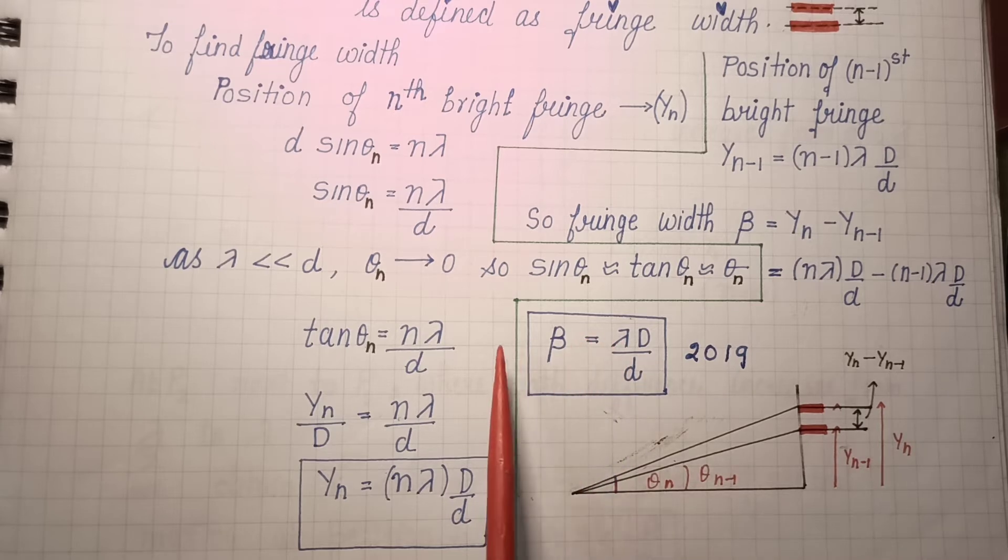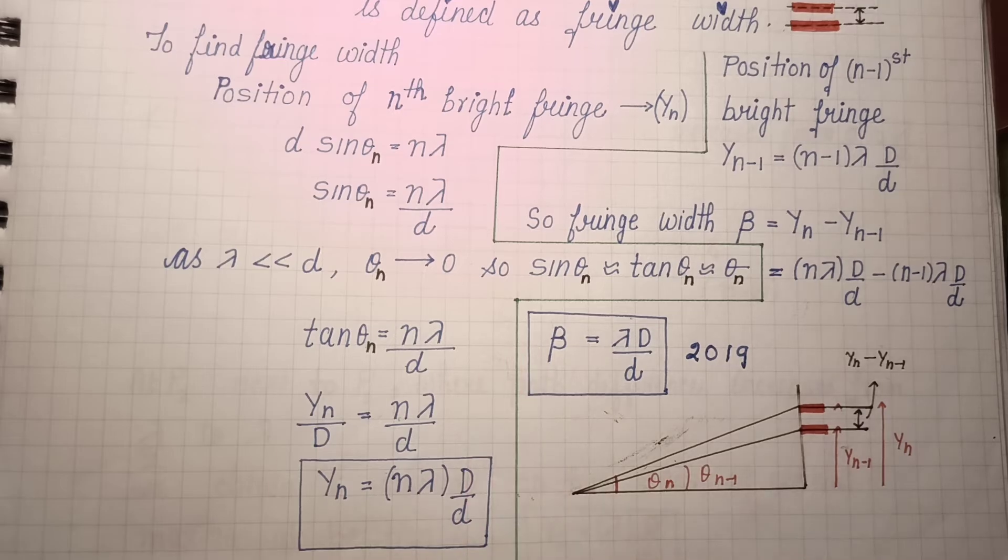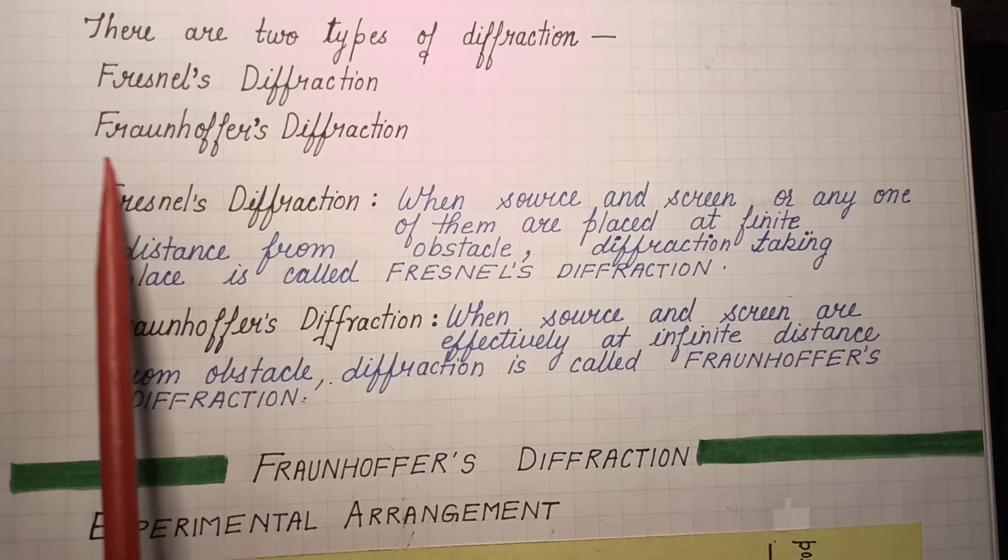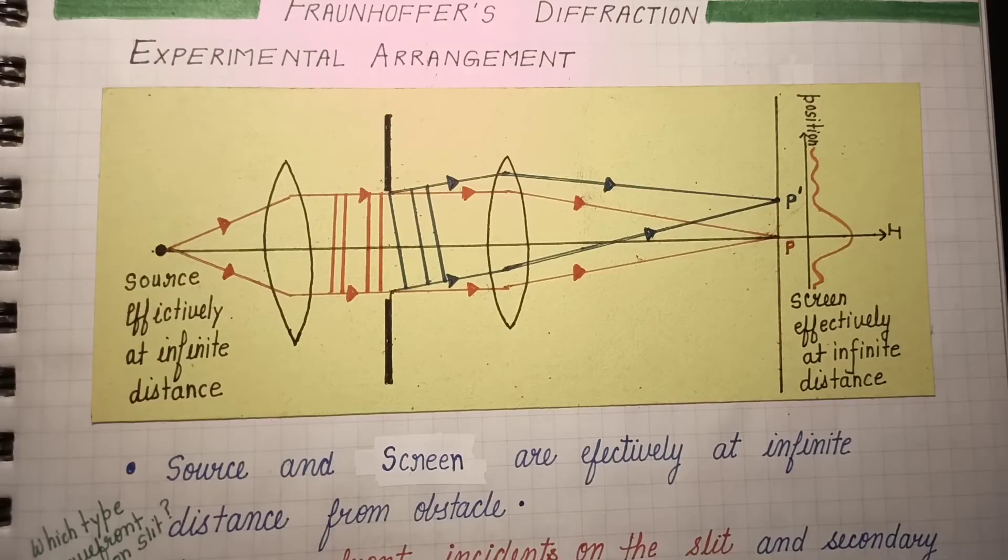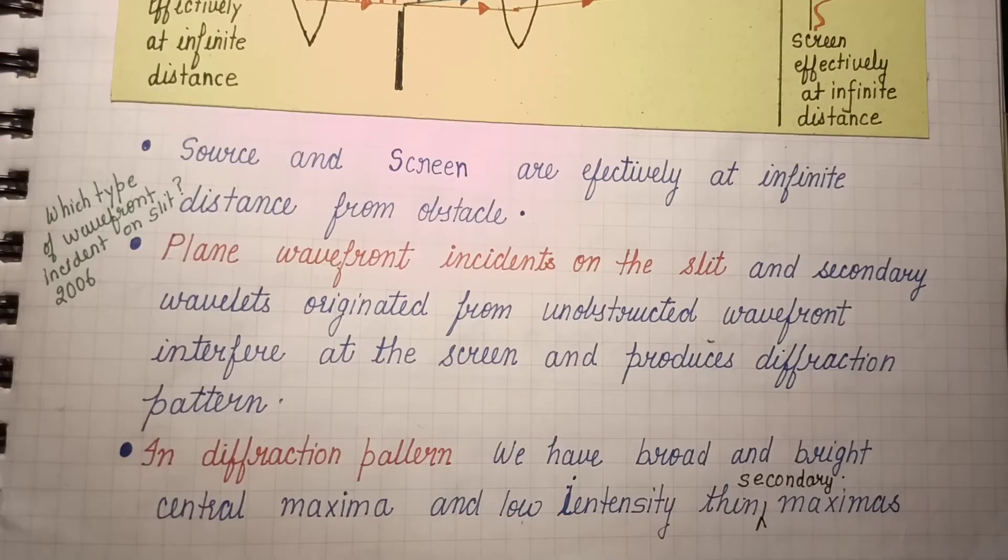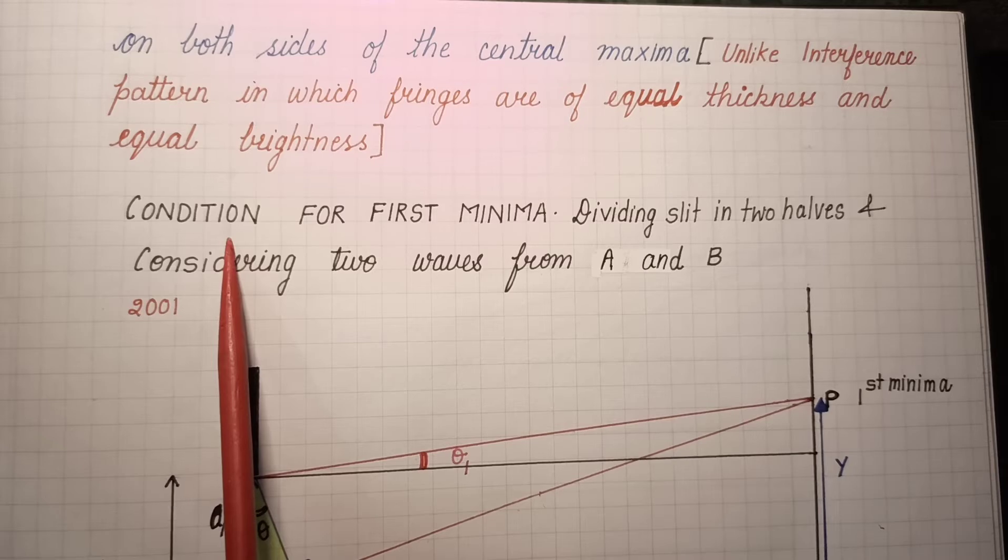We will talk about this in the next video. The next derivation is from Fraunhofer's diffraction which is in our syllabus. Here also we are having many one-liners which are given in these points. The derivation is condition for first minima or fringe width of central maxima.